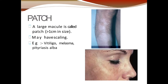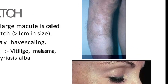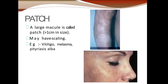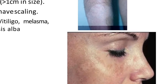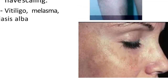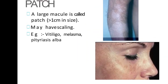Hypopigmented macules include tinea versicolor. The next term is patch. A large macule is called a patch — if the macule size is more than one centimeter, it is called a patch, and it may have scales on its surface. Examples of patches are vitiligo — the white depigmentation as seen in the picture — melasma, which is brown pigmentation usually occurring on the cheeks, and pityriasis alba.